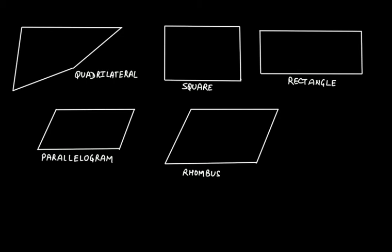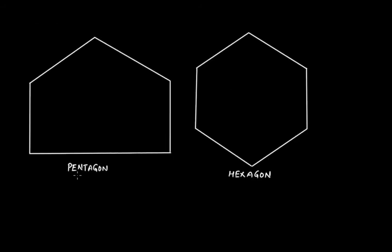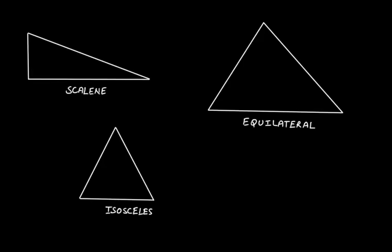Let's learn what are regular and irregular polygons and what is the difference between the two. Here we have some figures: a quadrilateral, a square, a rectangle, a parallelogram, and a rhombus. And then on the other slides we have a pentagon, a hexagon, a scalene triangle, an equilateral triangle, and an isosceles triangle.